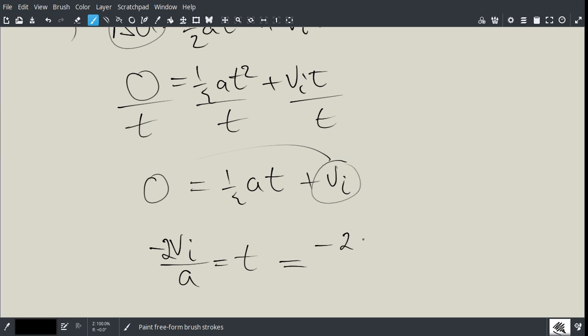And so now, if we put our numbers in, it's 2 times, negative 2 times 5, divided by negative g sine 20. And plugging that through our calculator will give us 2.98 seconds.